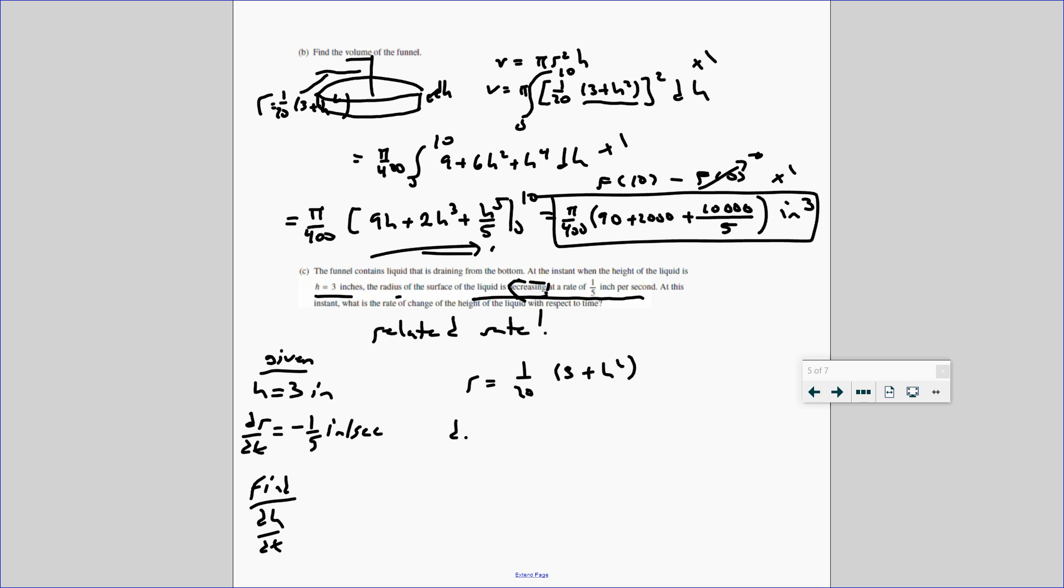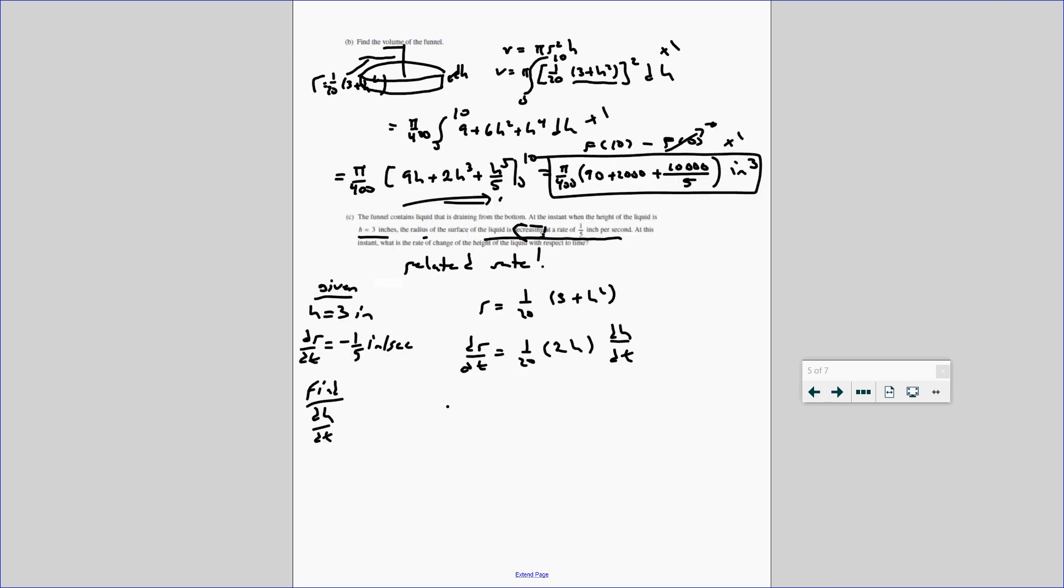So we take the derivative. dr/dt equals 1 over 20, 2h. But don't forget, it's implicit. There's a chain rule. dh/dt. And I just plug in. The dr/dt, as we know, is negative 1/5. Equals. This becomes 1 over 10. We're told the height is 3. dh/dt.